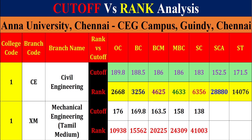First one: Civil Engineering. Civil Engineering in the OC category, cut-off is 189.75, rank is 2668. Next cut-off is 188.5, rank is 3256. Next cut-off is 186, rank is 4625.